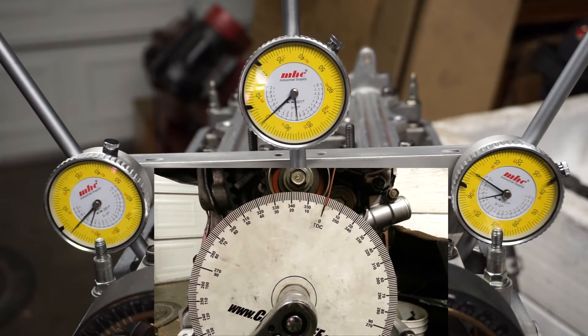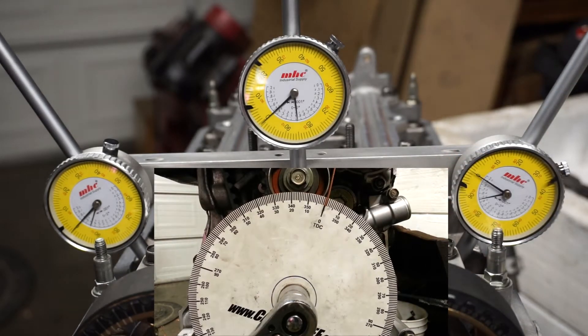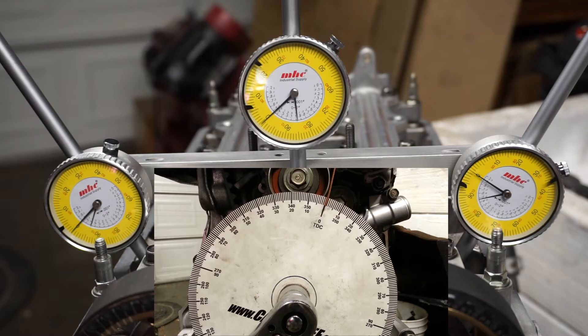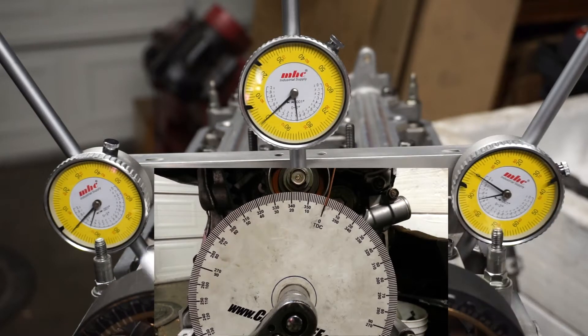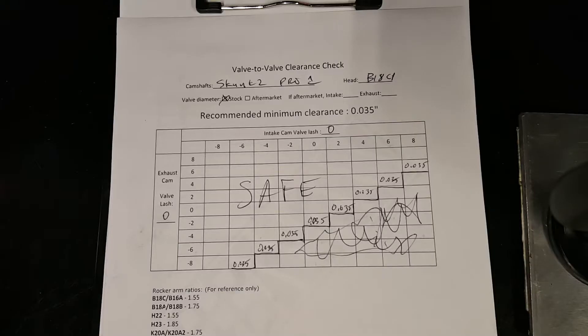Find the true TDC using the center dial indicator right here. Set it to zero - that's at true TDC and the degree wheel on the crankshaft is set right there at TDC. Everything's zeroed and you're ready to go. We'll start off with the cam gear settings at zero zero to start off.